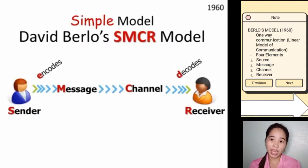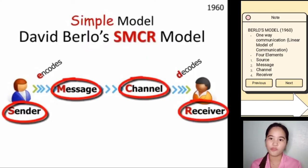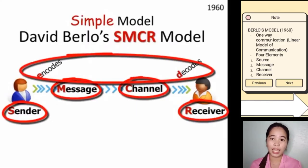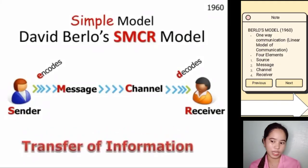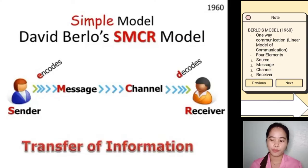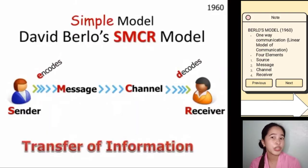You have five basic elements in this model: the sender or the source, the message, the channel, the receiver, and then the coding part — the encoding and decoding process. In this model, it views communication as a transfer, where the sender encodes a message and sends it through the channel, which gets decoded by the receiver. Everything in this process is one-way communication, or a linear communication model.